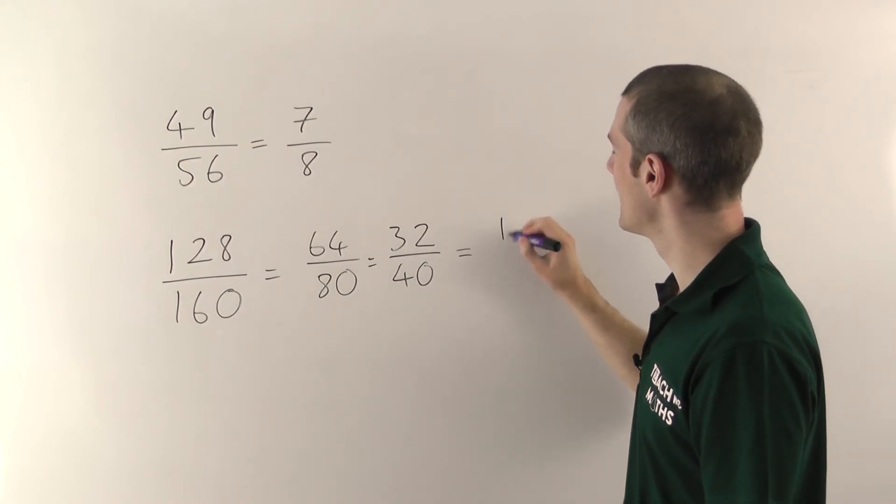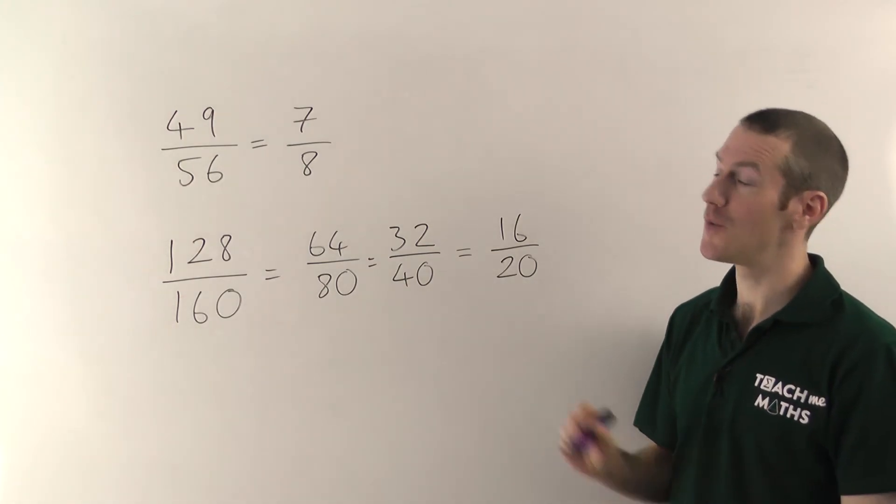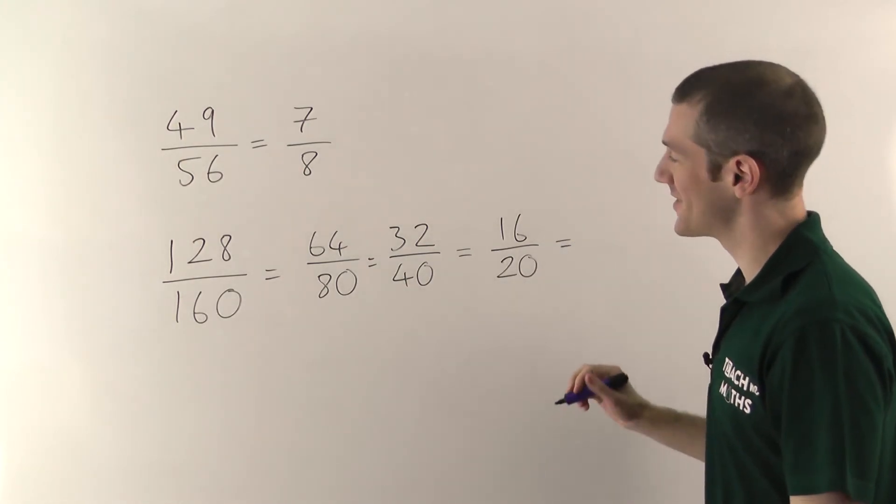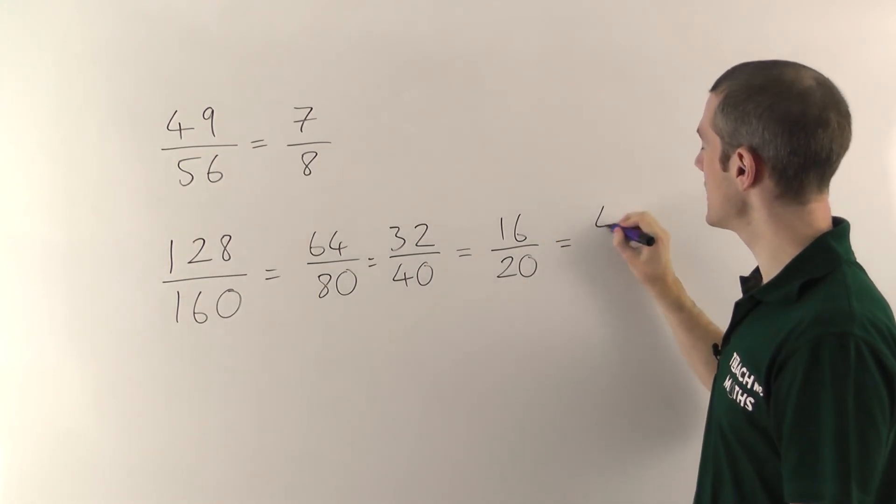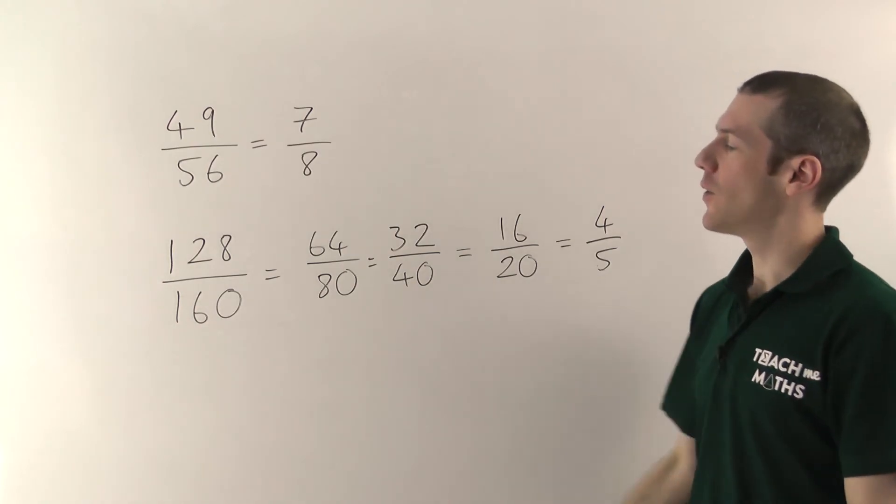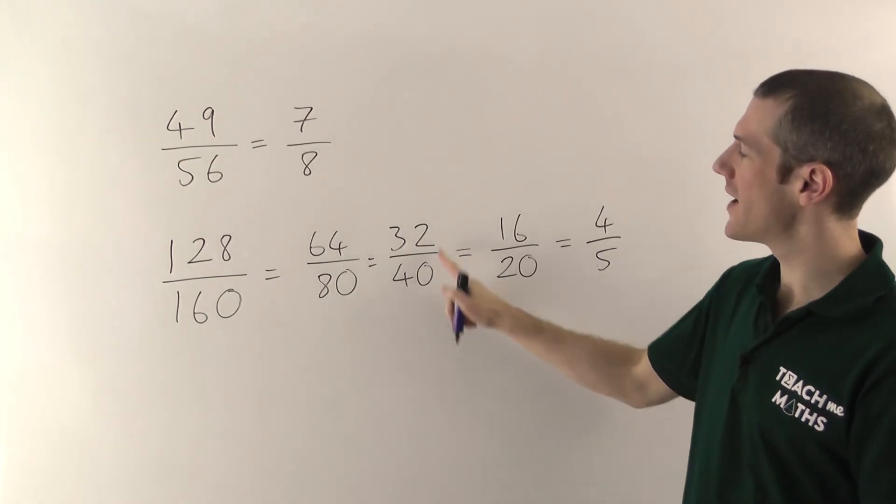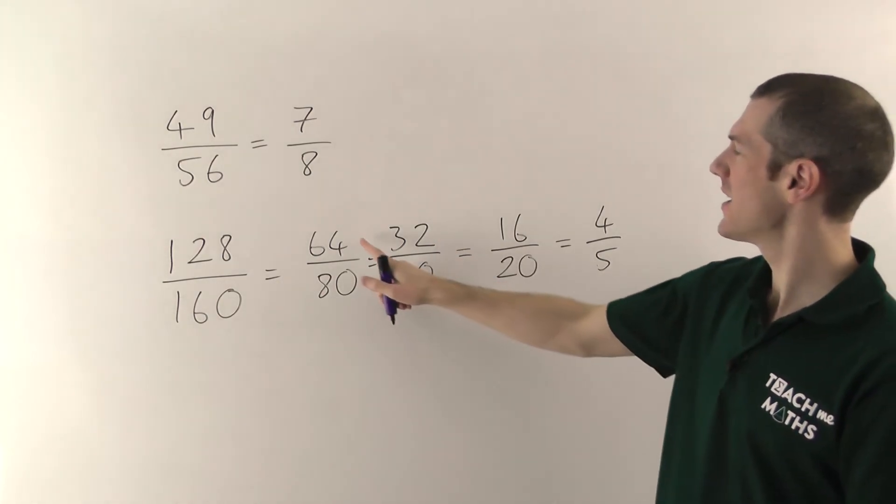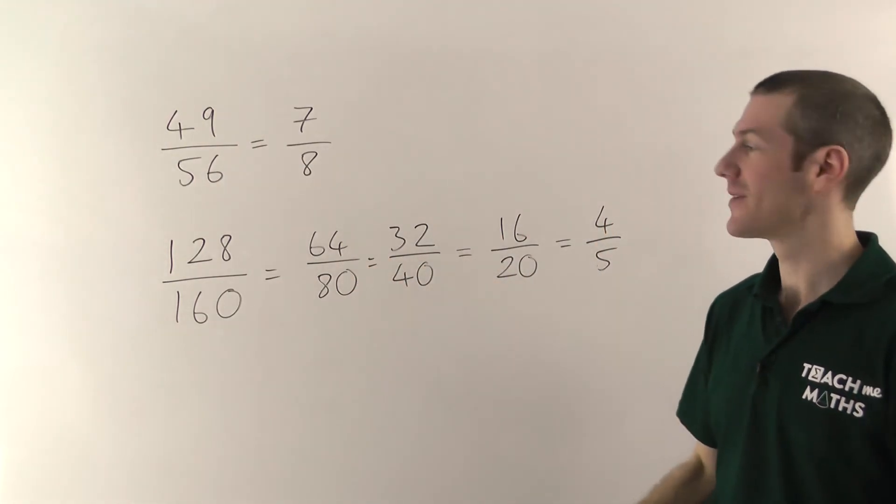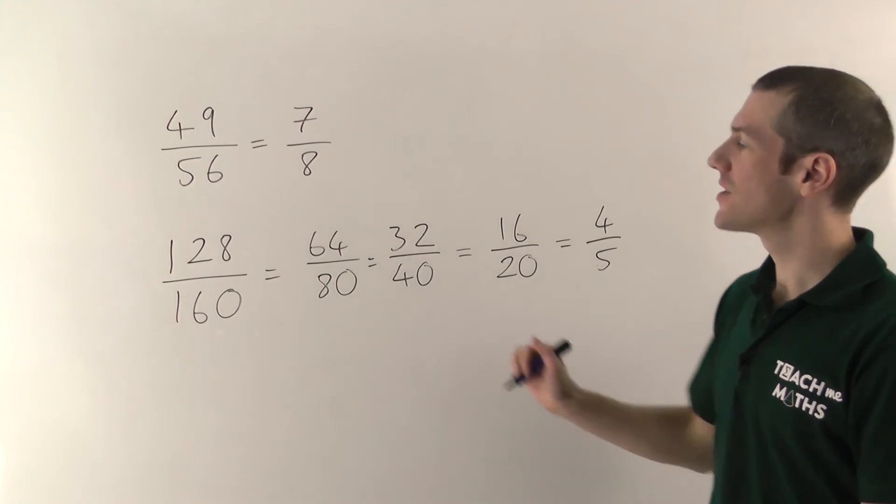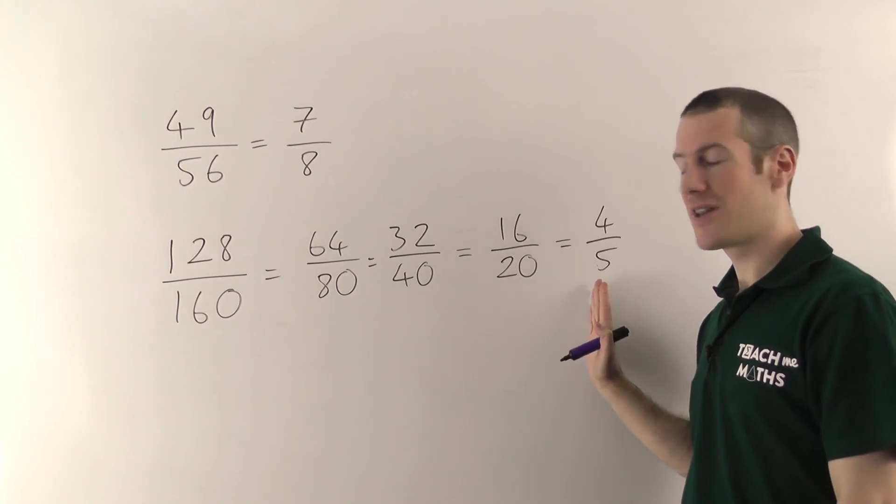Half of 32 is 16. Half of 40 is 20. Now you really should be able to spot what goes into both of these at this point. So let's jump straight to the answer here. 4 goes into 16 and 20. 4 4s are 16. 5 4s are 20. So 128 over 160 turns out to be 4 5ths. We could have divided by 8 here. And here, we could have divided by 16 actually. 16 would go into 64 and 80. But again, that would be a bit tricky to spot. So if you're struggling and they're both even, just keep dividing by 2. You should get there in the end.